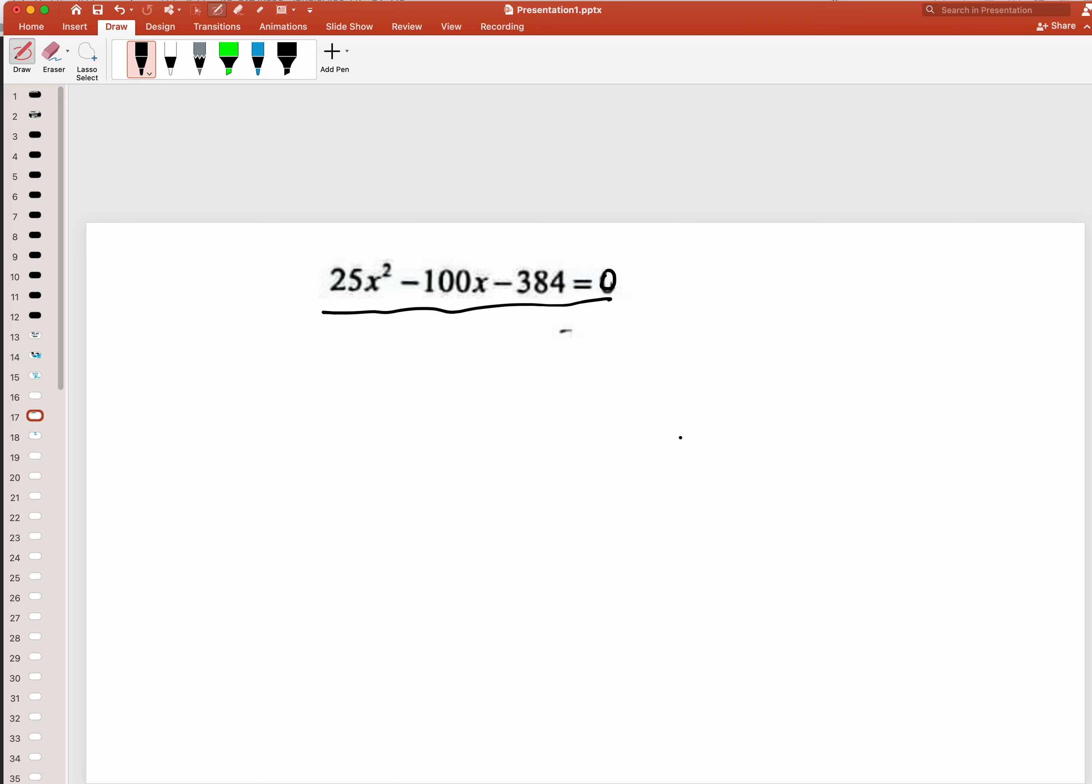Use a calculator to check whether you get good values. A good value means it's a rational number. You key in a equals 25, b equals negative 100, and c equals negative 384. You should get x equal to the values shown.